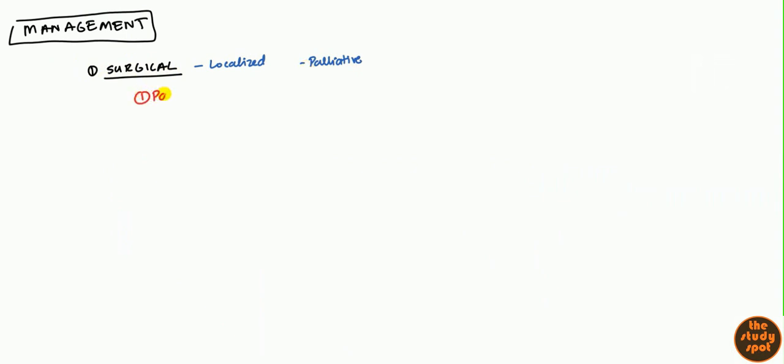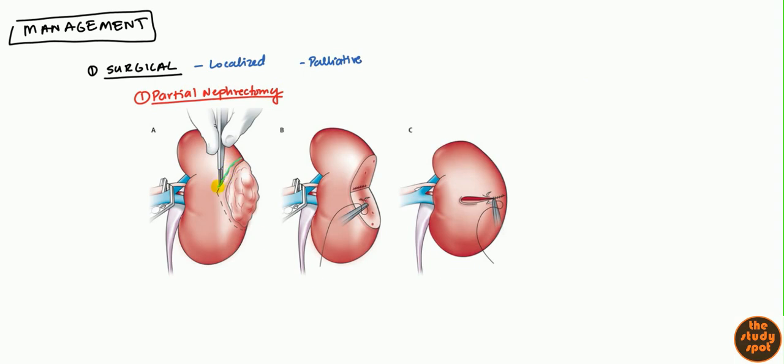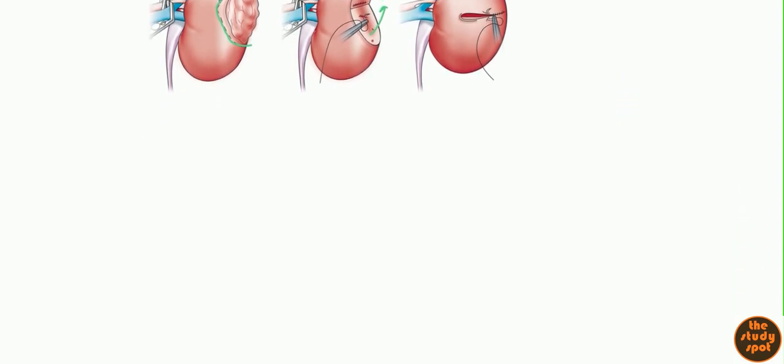The first thing you can do is a partial nephrectomy, and this is primarily for stage one and sometimes stage two. What you do is you cut a piece of the kidney right there, and then you take whatever pieces are left over and you bring them together and stitch them together. This is primarily with stage one, sometimes stage two, but usually stage two is too big to do this.